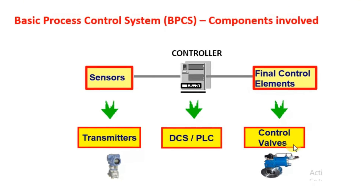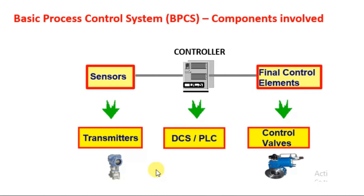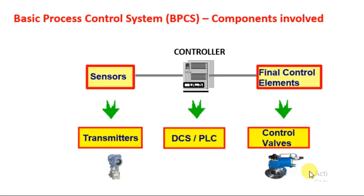This is the pictorial view of the DCS system — the PCS system — wherein we have transmitters as sensors, and a DCS or PLC as the controller. Finally, control elements are different kinds of valves. So we have gone through a basic overview of the BPCS control system.